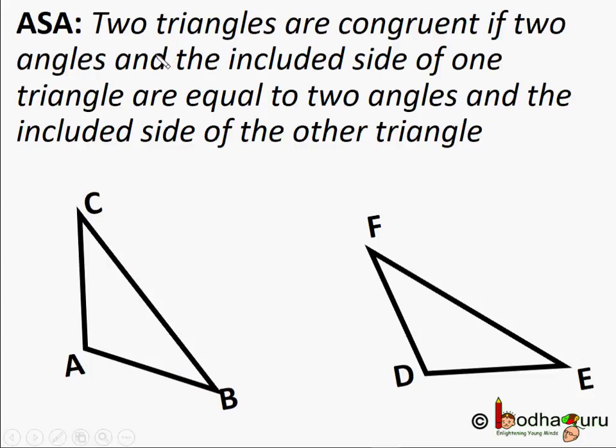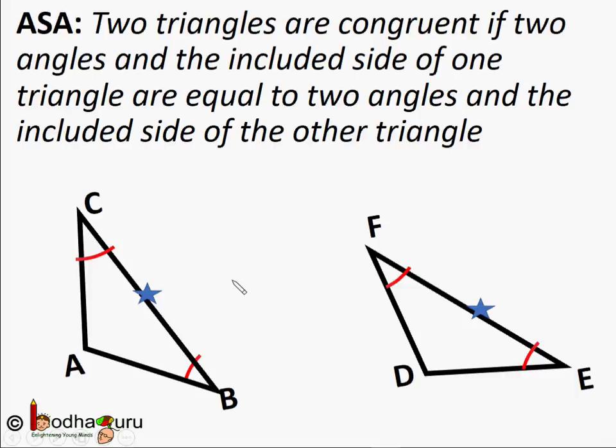ASA criteria can be proved using SAS axiom. ASA says two triangles are congruent if two angles and the included side of one triangle are equal to two angles and the included side of the other triangle.